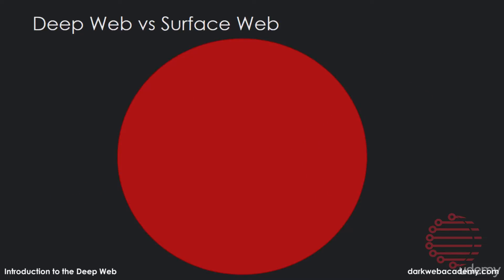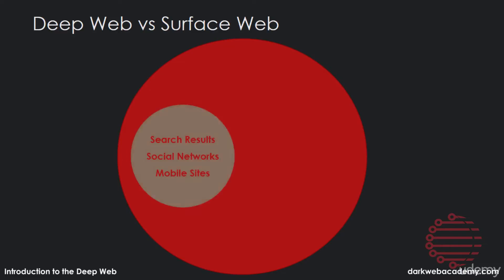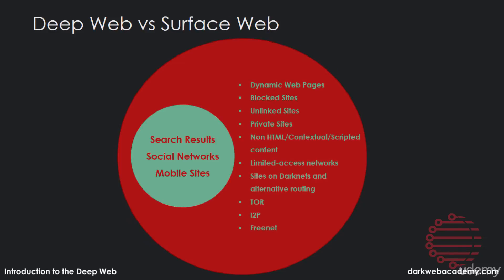Another way to look at it is using this circle here, which represents all of the internet. Here in this blue circle, we have the surface web, which contains search results, social networks, mobile sites — anything that you can access with a link. And then we have the deep web, which is everything else: dynamic web pages, block sites, unlinked sites, private sites, limited access networks, sites on dark nets and alternative routing, and so on.